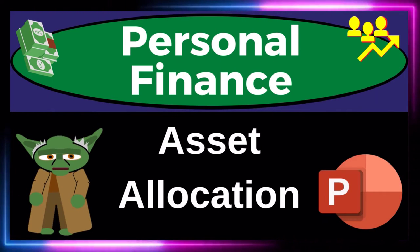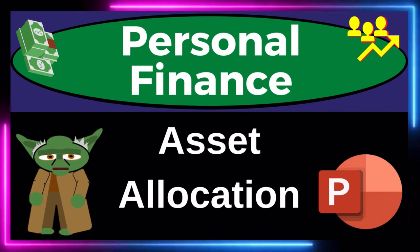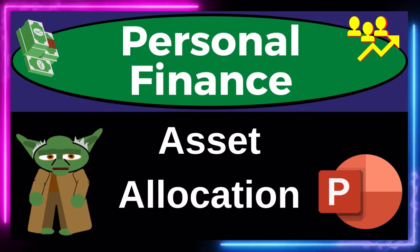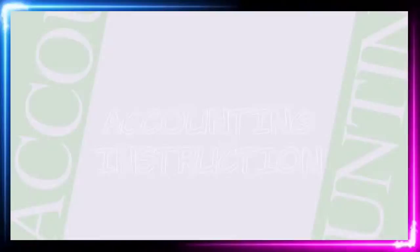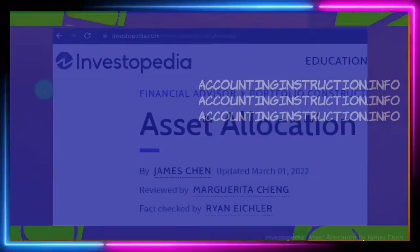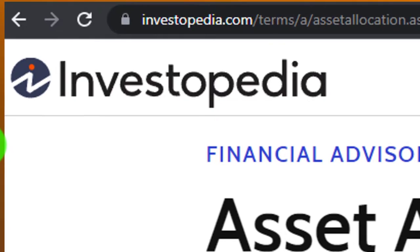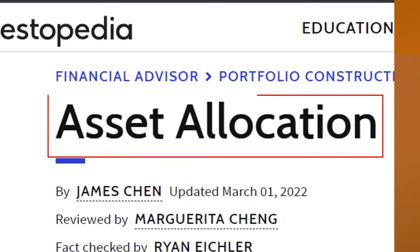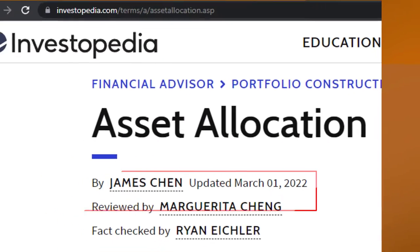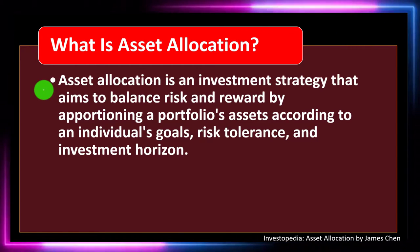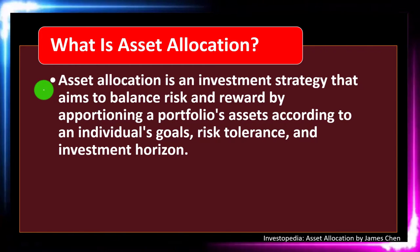Personal finance PowerPoint presentation: asset allocation. Prepare to get financially fit by practicing personal finance. Most of this information can be found at Investopedia's asset allocation article, which can be found online. Take a look at the references and resources to continue your research. This is by James Chen, updated March 1st, 2022.